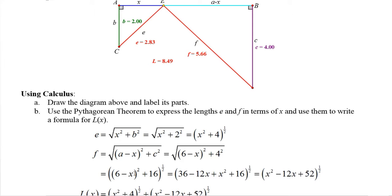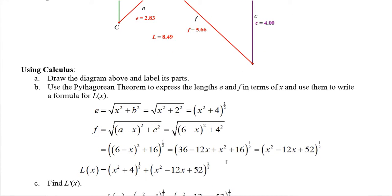Four squared is 16. If we square six minus x we get 36, square the first, square the last, x squared, multiply and double it, negative 12x for the middle term. Combine like terms and I rewrote it in decreasing order. That's x squared minus 12x plus 52 to the one half power. So the total length of pipe is adding those two together. We have an expression for the total length of pipe in terms of a single variable x.